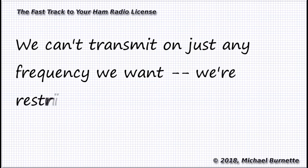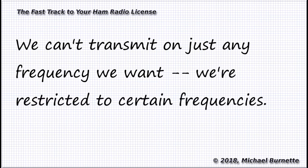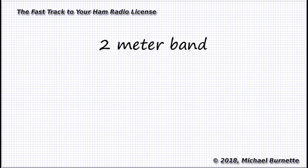Hams can only operate on certain ranges of radio frequencies. Each range is called a band. For instance, there's the two-meter band that stretches from 144 to 148 megahertz.